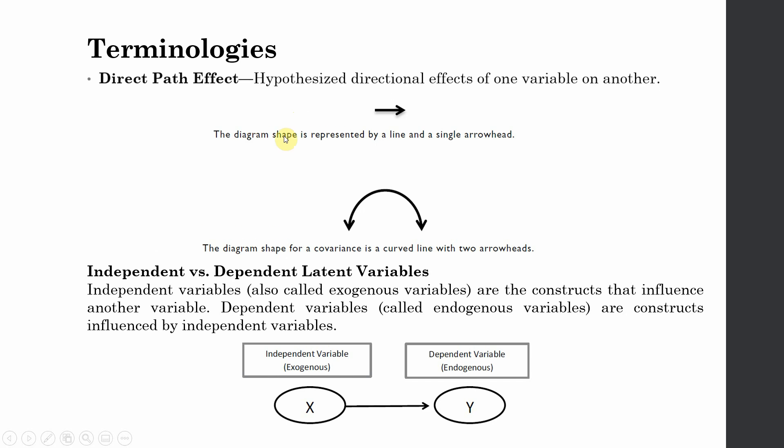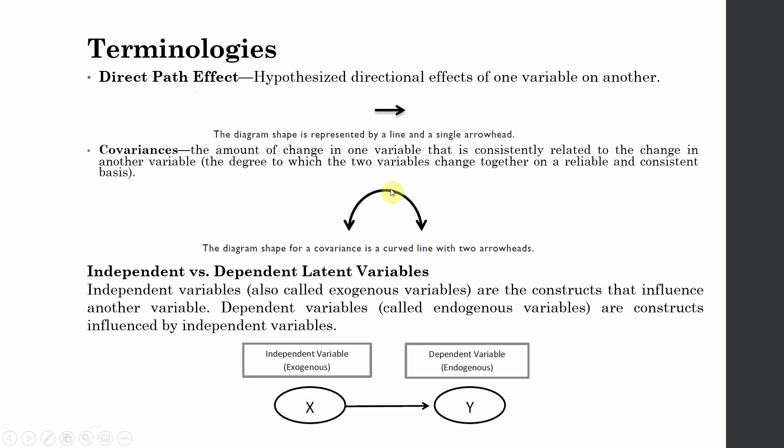Direct path effect: When we are assessing the impact of an IV on DV or an exogenous variable on the endogenous variable, we link these variables, these constructs, these factors through this single-headed arrow. Whereas this double-headed arrow draws the covariance between different constructs—the amount of change in one variable that is consistently related to the change in another variable. This is the symbol we use to draw covariance between two variables, and this is central to AMOS because AMOS is a covariance-based software.